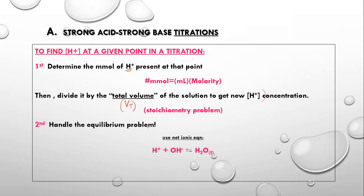Keep in mind that for a strong acid/strong base titration, the net ionic equation is always the autoionization of water. For example, using nitric acid titrated with sodium hydroxide — both strong — when you write the complete ionic equation, you get H⁺ + NO₃⁻ + Na⁺ + OH⁻ → H₂O(l) + Na⁺ + NO₃⁻.